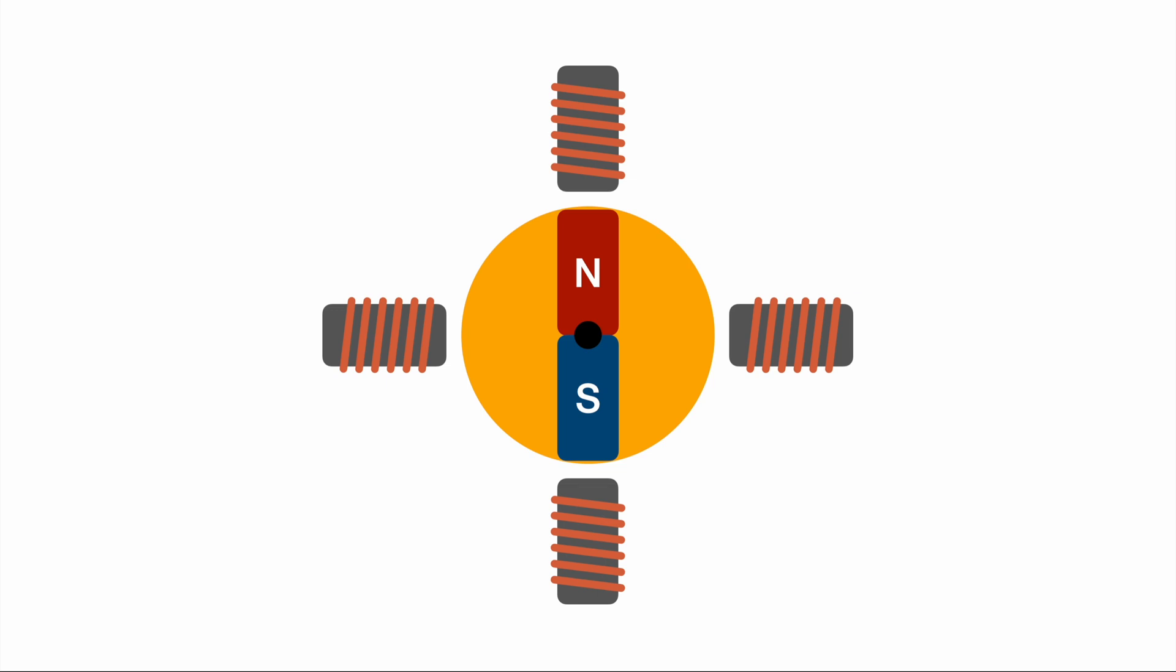To get started we have a setup like this. We have a permanent magnet in the middle in the so-called rotor, the part of the motor that will actually spin, and on the outside, the so-called stator. We have a couple of coils or solenoids arranged around the rotor in the middle.